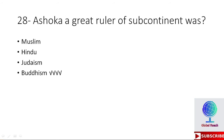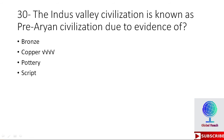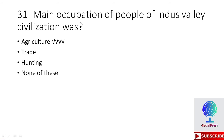MCQ 28: Ashoka, a great ruler of the subcontinent, was — Muslim, Hindu, Judaism, or Buddhist? The right option is Buddhism. Ashoka was a Buddhist ruler. MCQ 29: The Dravidians were made slaves by — Kushanas, Aryans, Sakas, or Parthians? The right option is Aryans. MCQ 30: The Indus Valley civilization is known as Pre-Aryan civilization due to evidence of — bronze, copper, pottery, or script? The right option is copper.